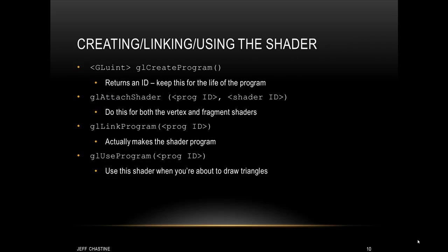Now that we've made a vertex and fragment shader, it's time to create a full shader program. The first thing you'd want to do is call glCreateProgram, which returns an ID that you need to keep for as long as you need the shader — typically the life of the program. After creating that ID, you'll make two calls to glAttachShader: once passing the program ID and the vertex shader ID, and a second time passing the program ID and the fragment shader ID. The last thing you'll do is call glLinkProgram, which links the vertex and fragment shaders together and makes the full shader program. Finally, to use this shader program, call glUseProgram and pass it the shader program ID — typically right before drawing any triangles to the screen.